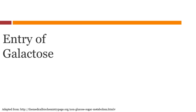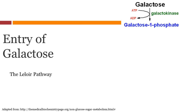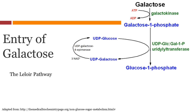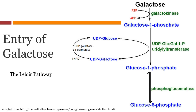Entry of galactose — this pathway is also known as the Leloir pathway. Galactose is first converted to galactose 1-phosphate using 1 ATP, facilitated by galactokinase. Going from galactose 1-phosphate to glucose 1-phosphate is carried out by a pathway where UDP-glucose is converted to UDP-galactose. UDP-galactose is then regenerated through UDP-epimerase. Glucose 1-phosphate is then converted to glucose 6-phosphate through phosphoglucomutase.